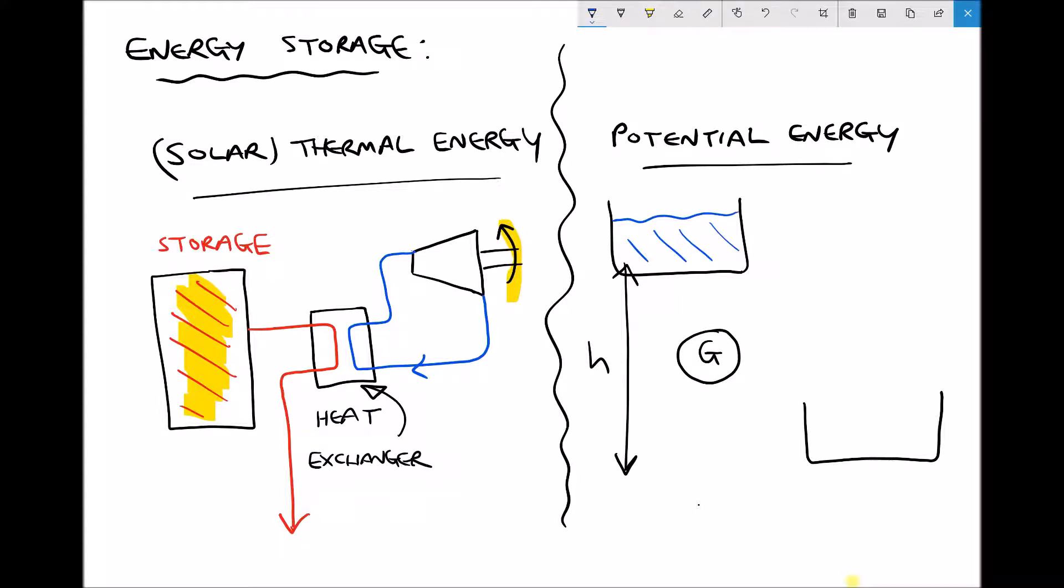Now once again when demand for energy is high we can release that fluid and allow it to flow into a lower reservoir like so. And in doing so we can pass that fluid through a generator. So the fluid is going to flow through a generator. The generator is going to turn, preferably at 1550 RPM, and we're going to be able to supply electricity to the national grid.